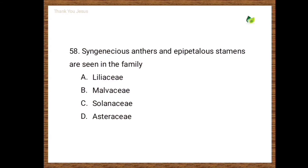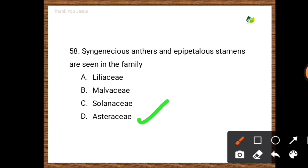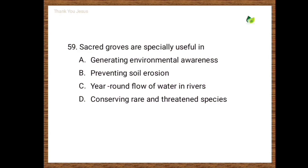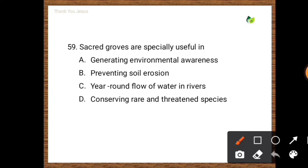Next question: Syngenesious anthers and epipetalous stamens are seen in the family — options are Liliaceae, Malvaceae, Solanaceae, Asteraceae. Correct option is Asteraceae. Next question: Sacred groves are especially useful in — generating environmental awareness, preventing soil erosion, year-round flow of water in rivers, conserving rare and threatened species. The correct option is conserving rare and threatened species.